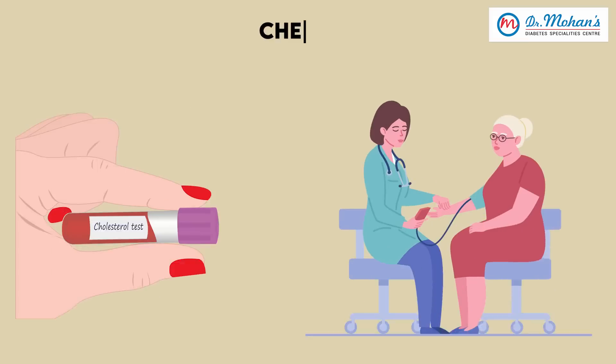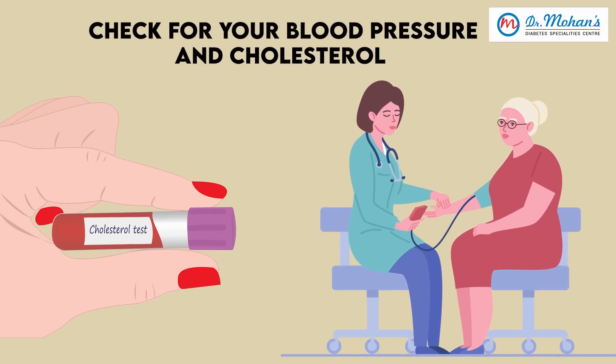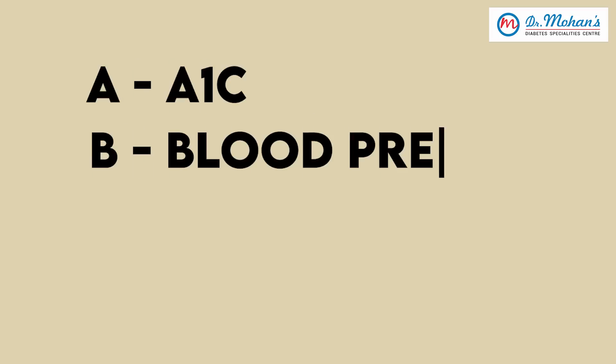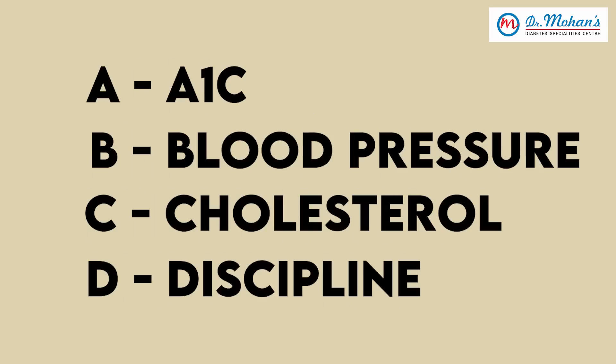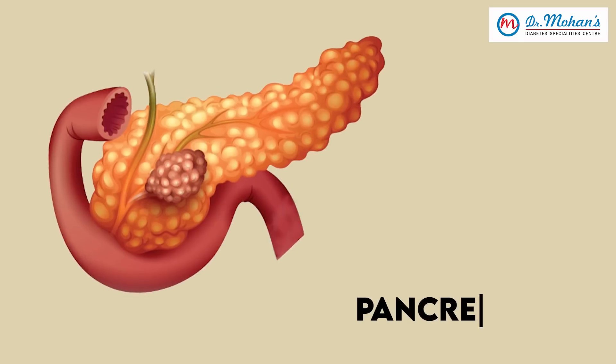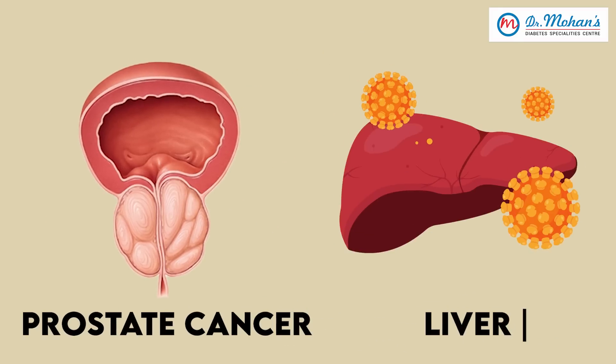When you come to a diabetic centre, we will routinely check your sugar, blood pressure, and cholesterol — we call it A, B, C: HbA1c is A, blood pressure is B, C is cholesterol. D of course is discipline, which is in your hands. Apart from that, we look for complications of diabetes — whether eye, kidney, heart, feet, or nerves are affected — as part of the annual screening. While doing the blood test, we will add one or two extra tests like the PSA test or other tests to pick up pancreatic cancer, prostate cancer, or liver cancer if we suspect it.